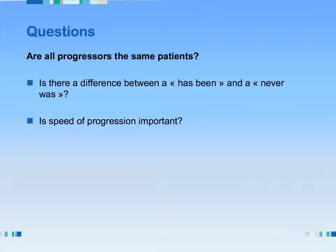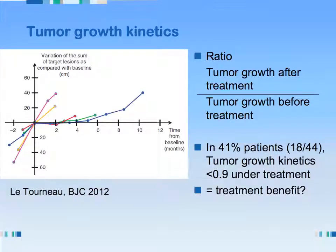I'm separating this into two things. Is there a difference between a patient that initially responded versus one that never really responded and is now progressing slowly? And the second question: is the speed of progression important? Some people have started to work on that. There was a publication from the Institut Curie in Paris on tumor growth kinetics — they measured kinetics before treatment and compared them to kinetics after treatment. In 44 patients, almost half had a decrease in tumor growth speed under treatment. The problem is, right now we don't know if that reflects treatment benefit, or what the threshold of tumor growth inhibition would be.